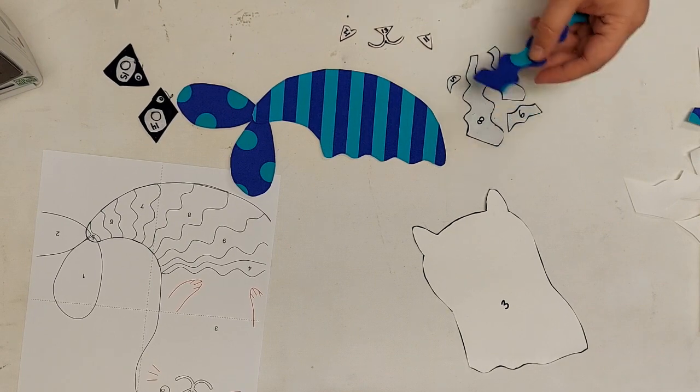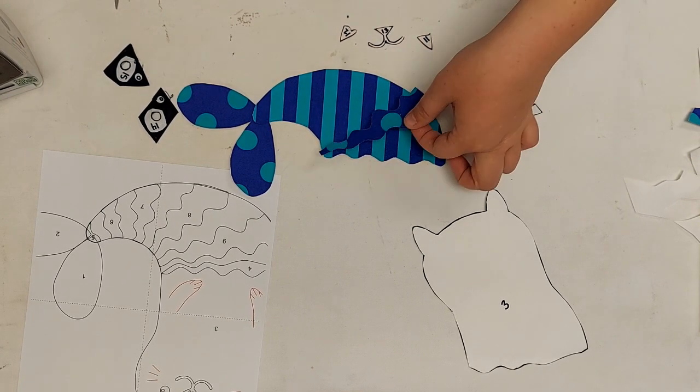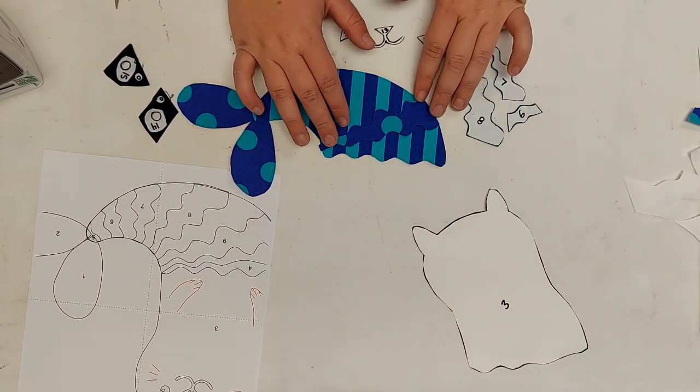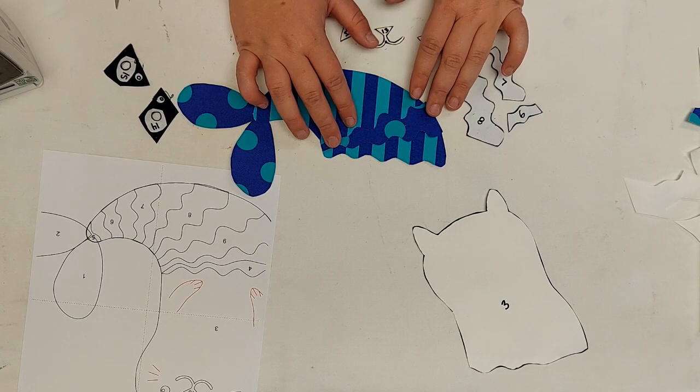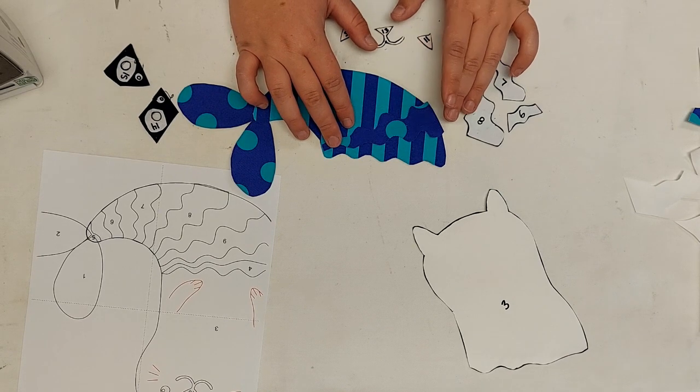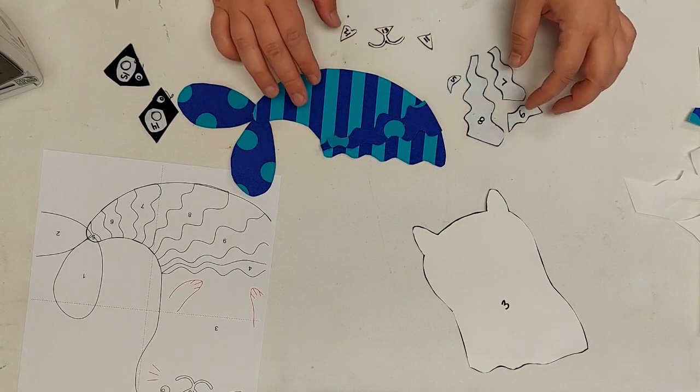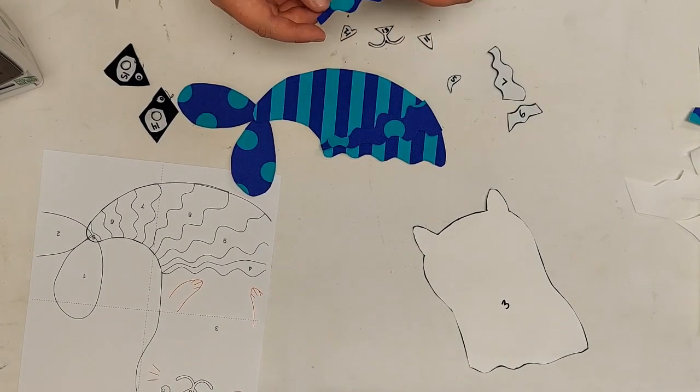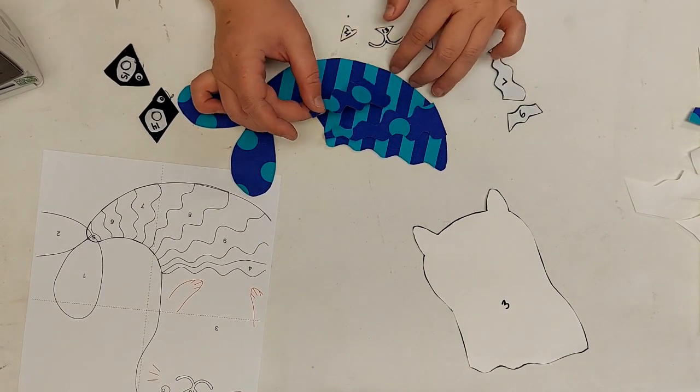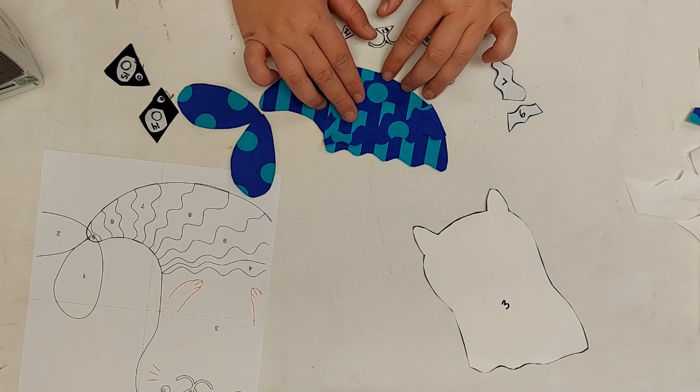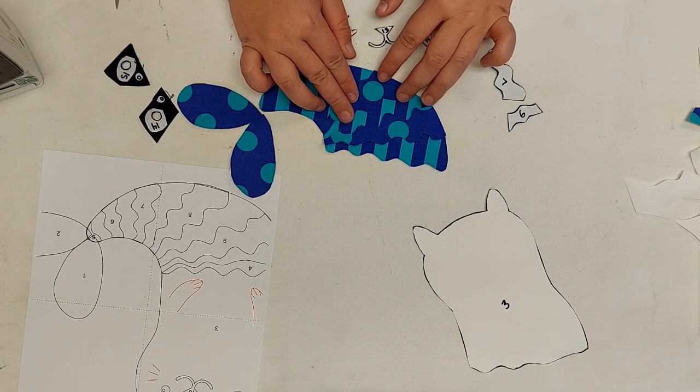I'm going to start by fusing all of these larger pieces on first, so then I only have to adhere one big tailpiece.